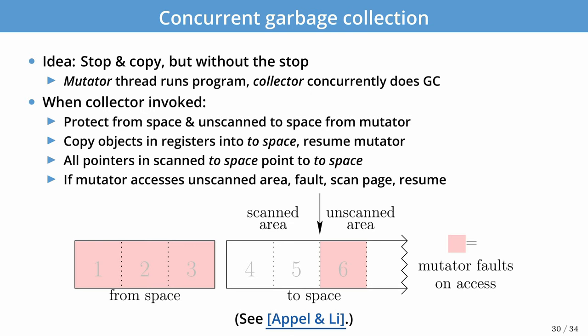This brings us to the concurrent garbage collector, a common optimization. The concurrent garbage collector allows stop-and-copy without really stopping the program — we allow the program to continue running. But every time the program wants to modify memory, we track those mutators — those attempts to modify memory — to ensure changes are propagated to the new pool of memory and that pointers are properly updated. When the collector is invoked, we can use memory management tricks like mprotect to block modifications to the old memory, start copying objects pointed to by registers or the stack into the new pool, and then resume the program.